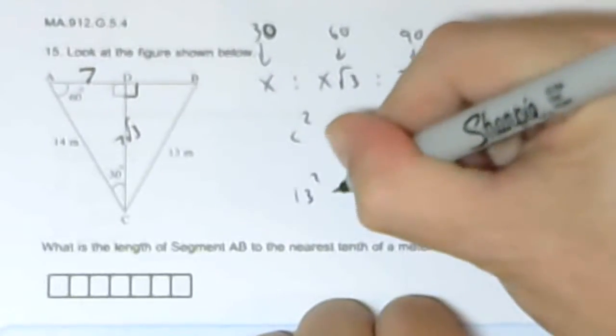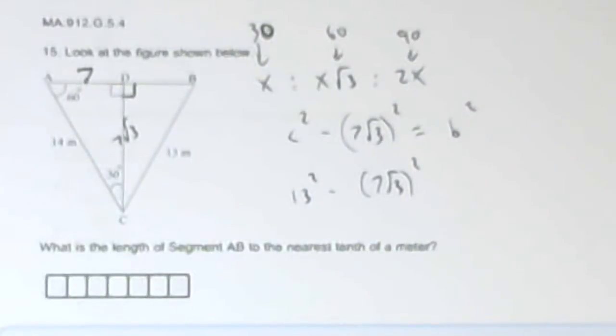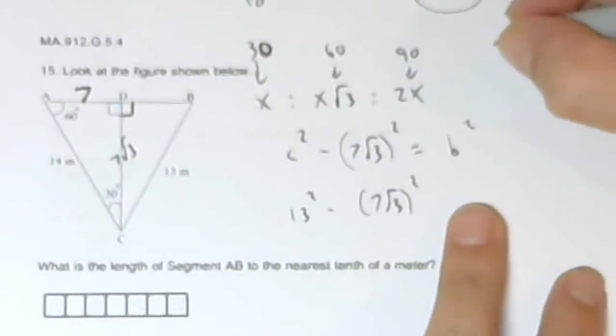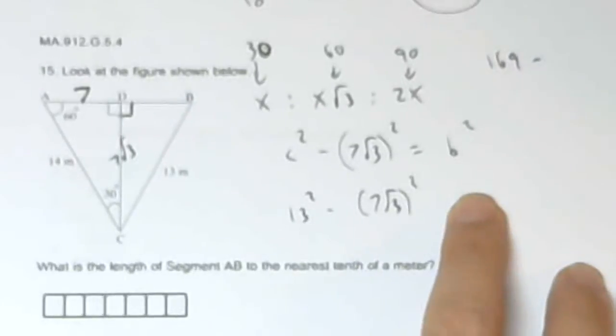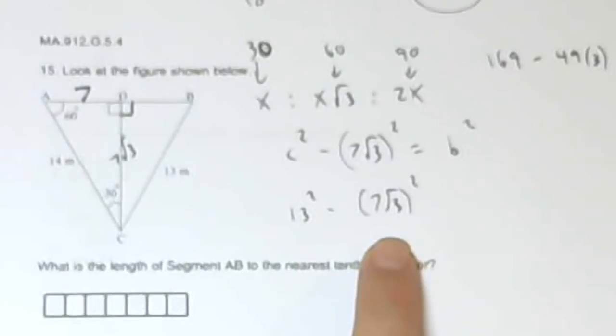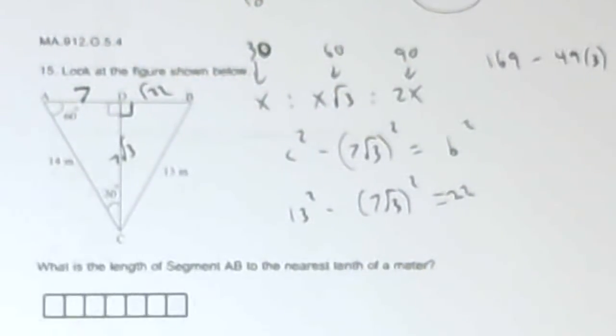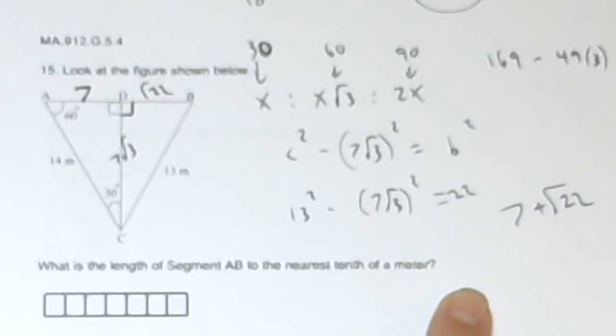So this is 13 squared minus 7 root 3 squared, which is 169 minus 49 times 3. Which is 22. So this is going to be the square root of 22. So to the nearest tenth of a meter should be 7 plus the square root of 22.